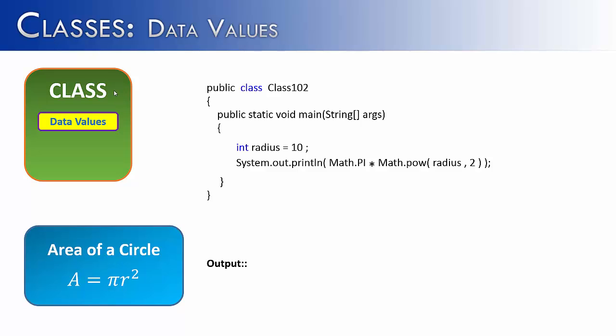In this example I want to show how to use both a data value and a method inside of a programming example. And what I've chosen to find is the area of a circle. And we can see in the bottom left hand corner here that the area of a circle is equal to pi times r squared or radius squared. So I have a value called radius. I use Math.PI which is going to represent the data value inside of the class times Math.pow which is taking the first value to the power of the second value. So radius squared. And when it prints out it should and does give us the area of this particular circle.